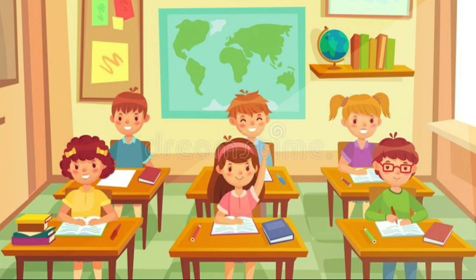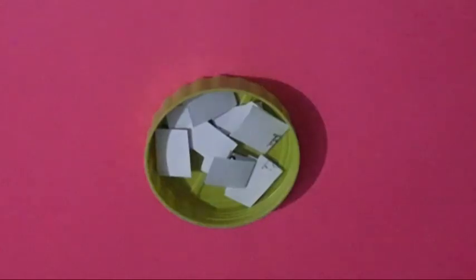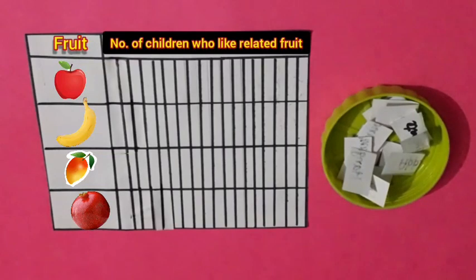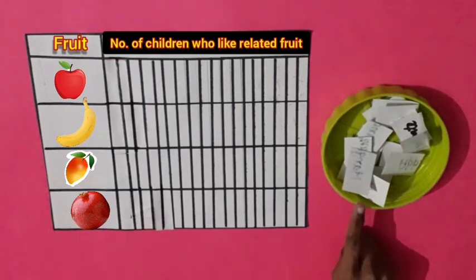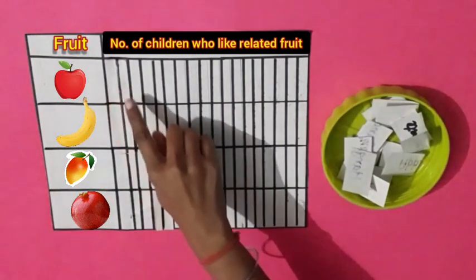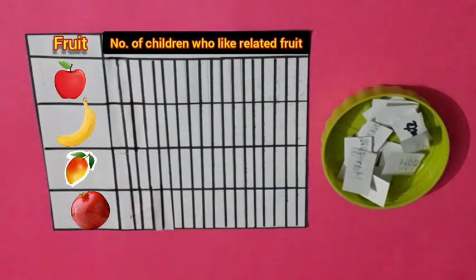Now we will find out which fruits the children of our class like. Children write the names of their favorite fruit on the paper, fold it and keep it in. Now we will collect the papers, and for the fruit whose name is written on it, we will color the box in front of that fruit. Let's see.